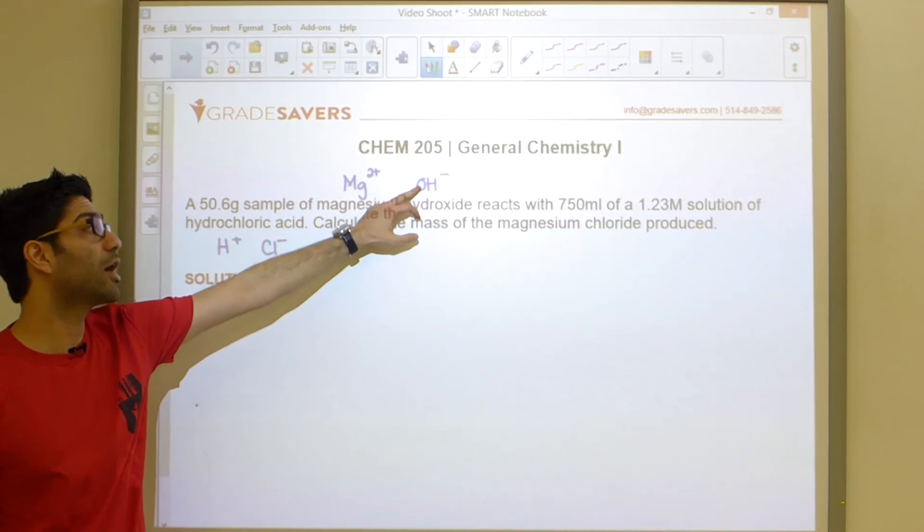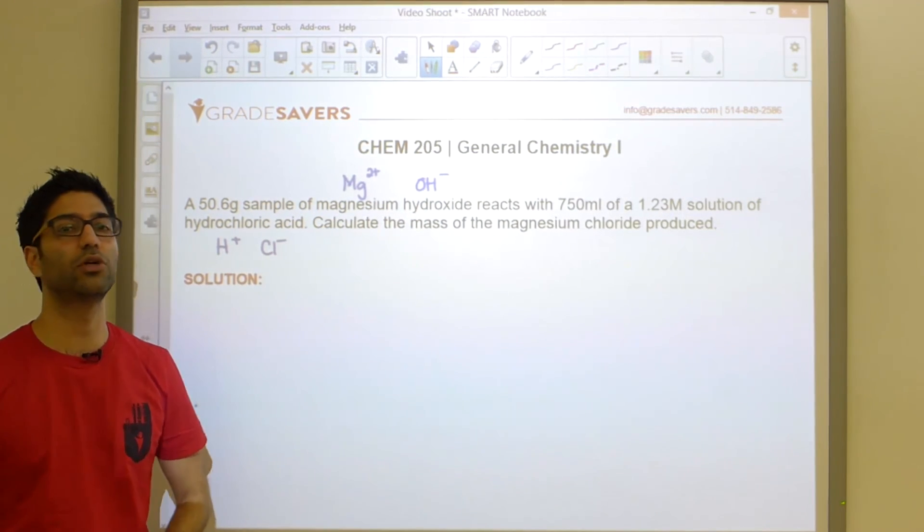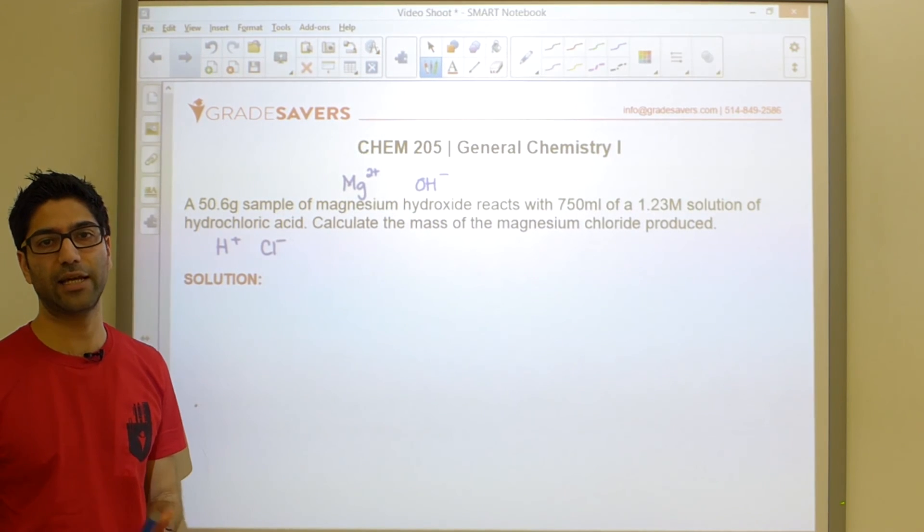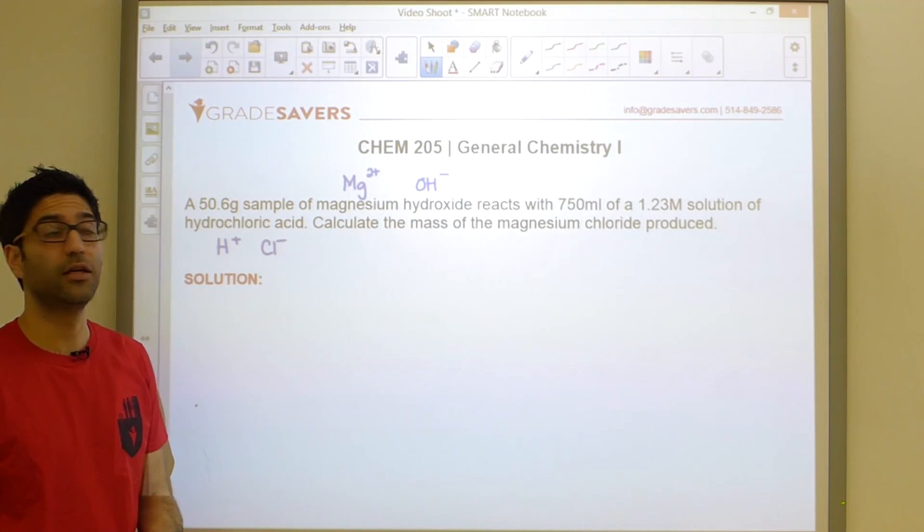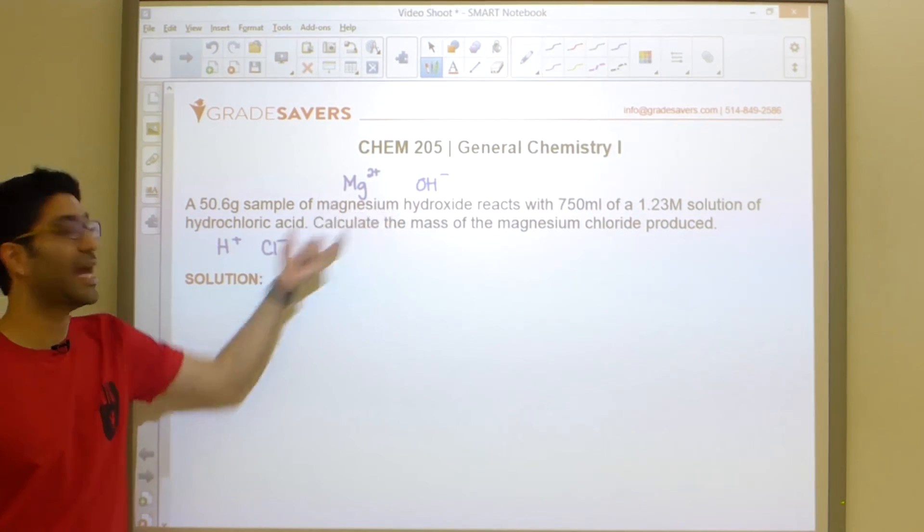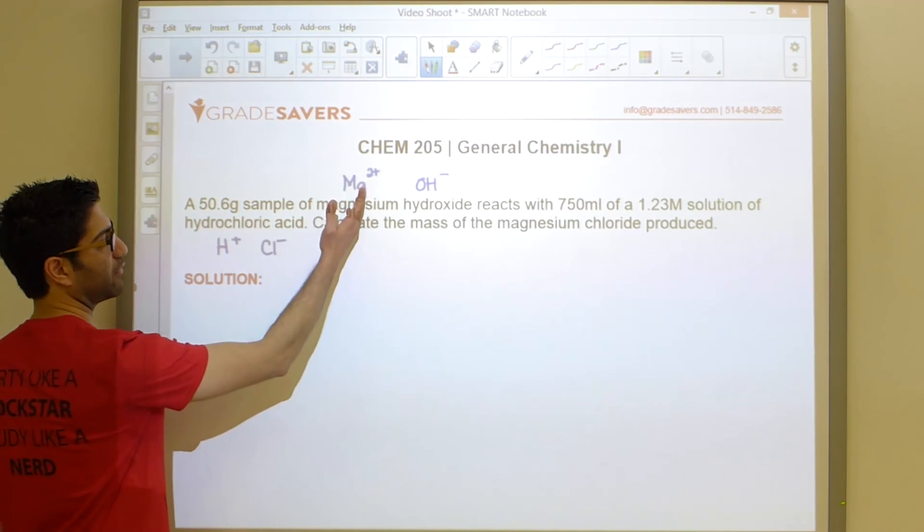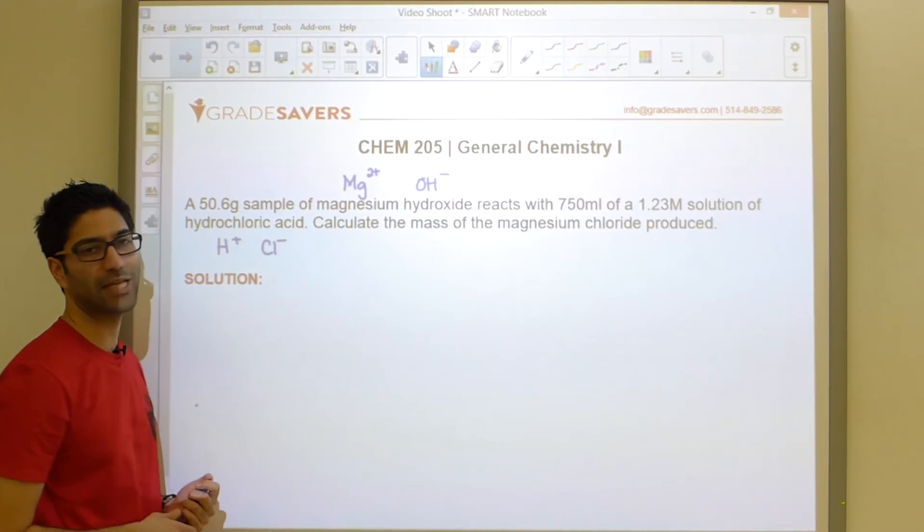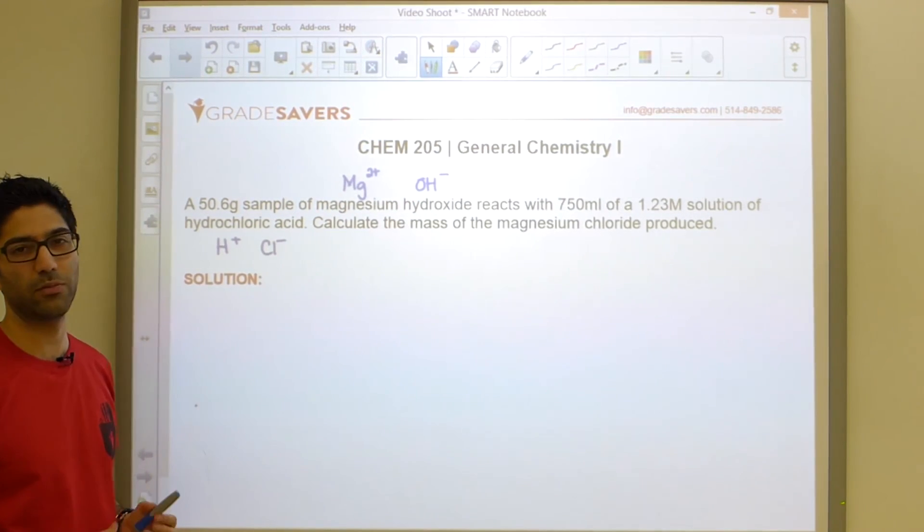You should know what reacting this guy and this guy is going to produce. You should know that a strong acid with a strong base always makes some sort of salt and then water. Even if you didn't know that, you should still know how to combine such reactions by applying a double displacement procedure. You should know what the products are going to be.